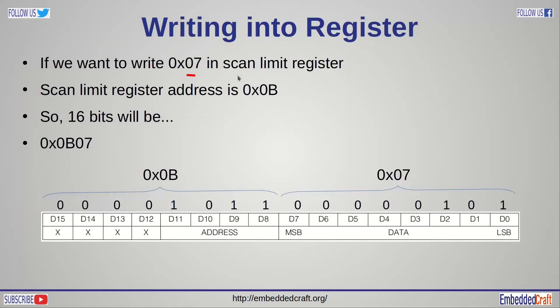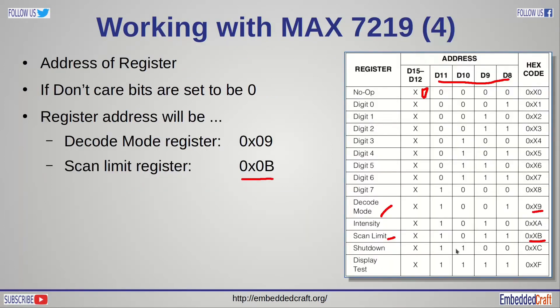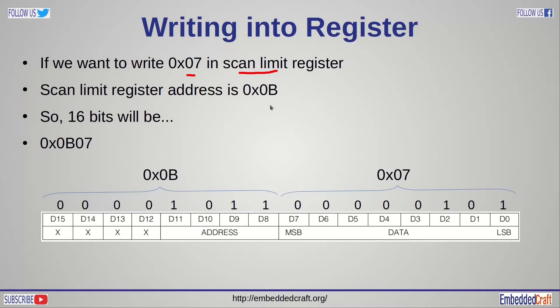Suppose we need to write 7 in scan limit register. First step is to find out address of scan limit register. As per this table, you can see address of scan limit register is B. In that case 16 bits which we need to send is 0x0B 07. 0x0B is address of register and 0x07 is the value which will be written in scan limit register.